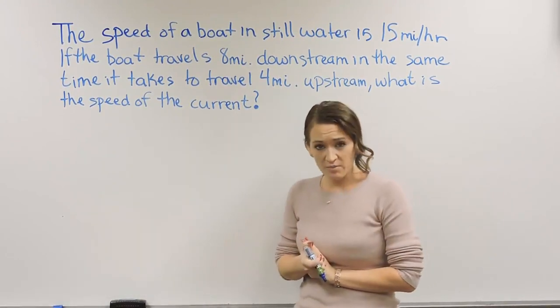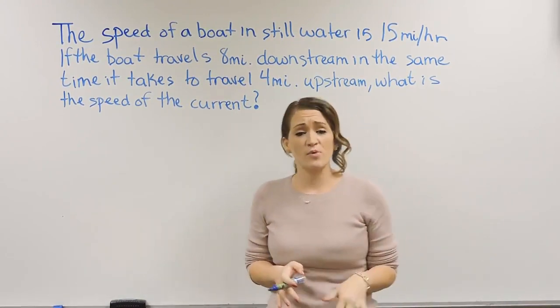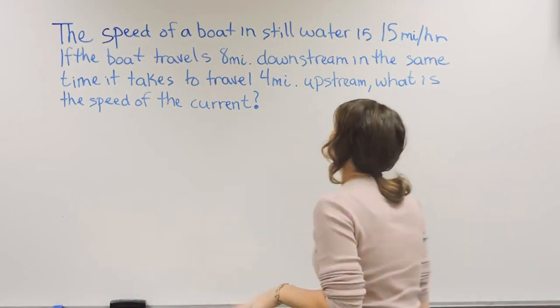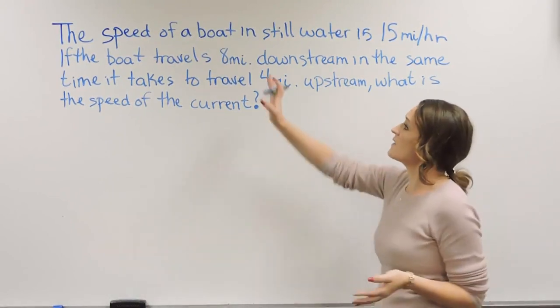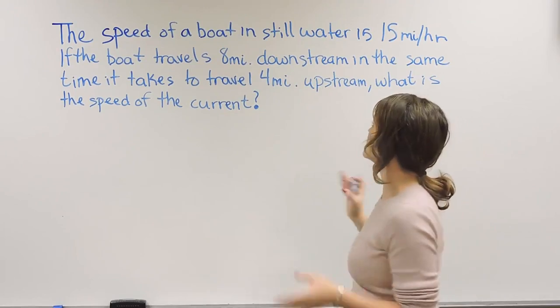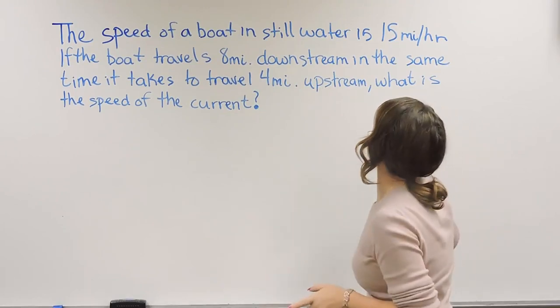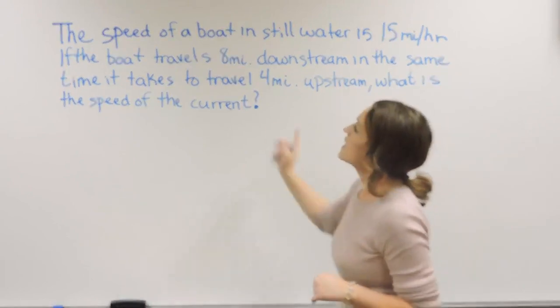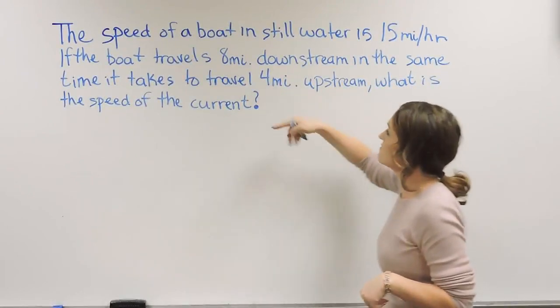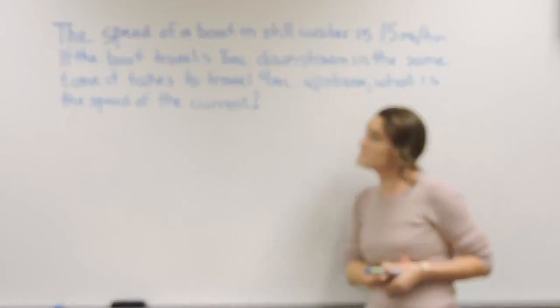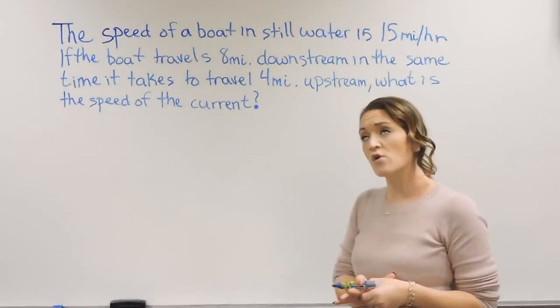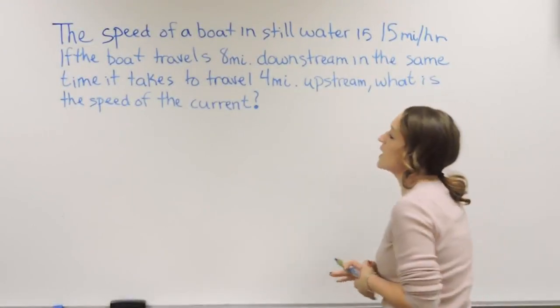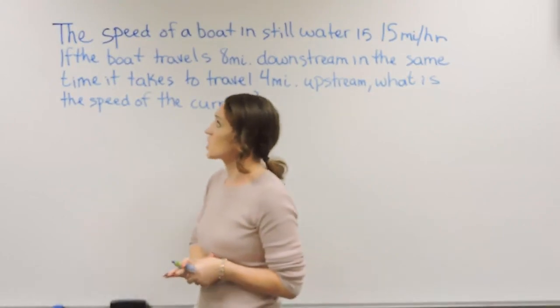So let's go ahead and read through this problem so we see specifically what kind of problem we're talking about here. So this problem says the speed of a boat in still water is 15 miles per hour. If the boat travels 8 miles downstream in the same time that it takes it to travel 4 miles upstream, what is the speed of the current here?